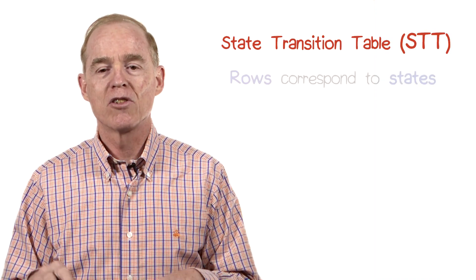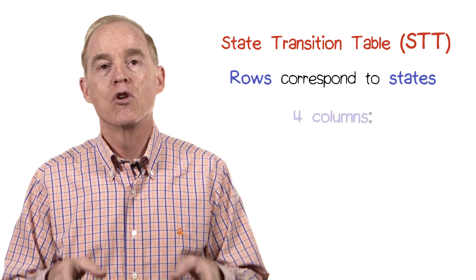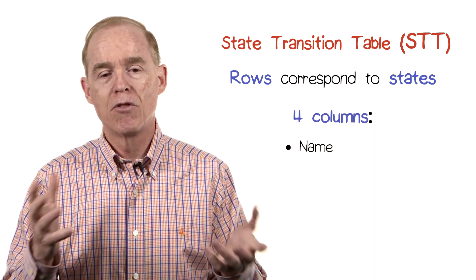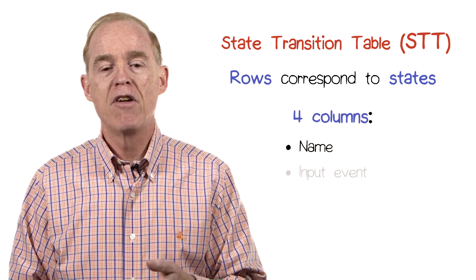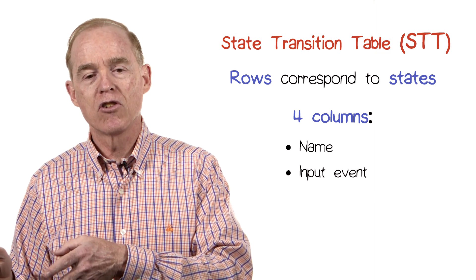We can represent these finite state machines in a variety of ways. Let's start with a tabular form called a state transition table. Here the rows correspond to states, and there are four columns: one column for the name of the state, and another for the input event which is going to cause the transition.